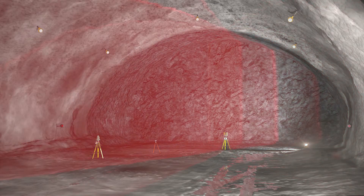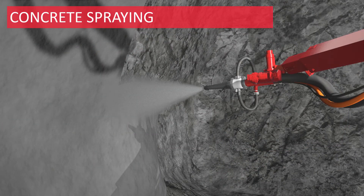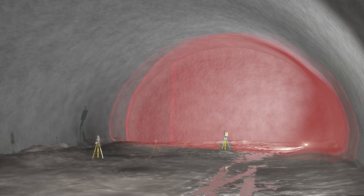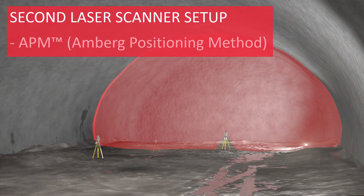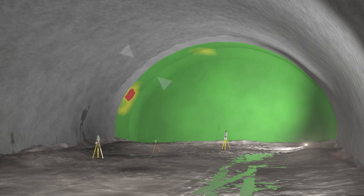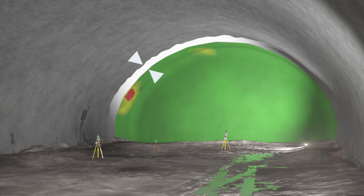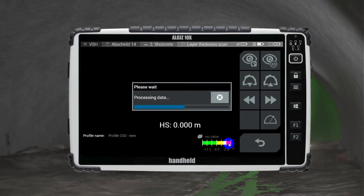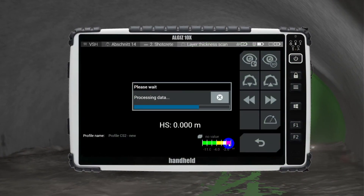With the laser scanner now set up, the reference scan is captured and transferred automatically to the Amber Navigator tablet. At this stage, concrete spraying can commence. When the nozzle operator is satisfied with the first pass, the laser scanner is simply repositioned with the Amber positioning method and the comparison scan is made. With both the reference and comparison scans captured, Amber Navigator will instantly start processing the data and display the layer thickness results on the screen.